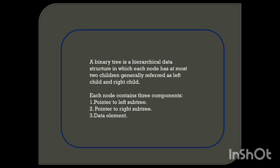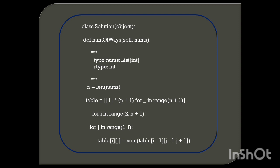Now let's discuss the logic and write the code. We define a class Solution with a method numberOfWays taking self and nums as a list of integers. We set n equal to the length of nums, then initialize a table of size (n+1) x (n+1) with ones. We use nested for loops: for i in range(2, n+1), for j in range(1, i), and compute table[i][j] as the sum of table[i-1][j-1:j+1].